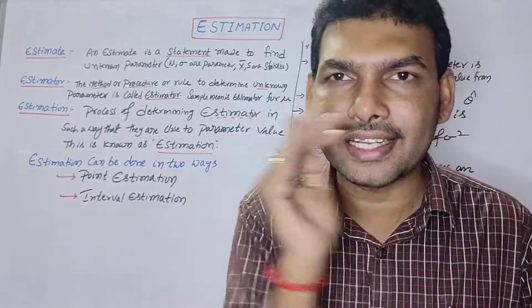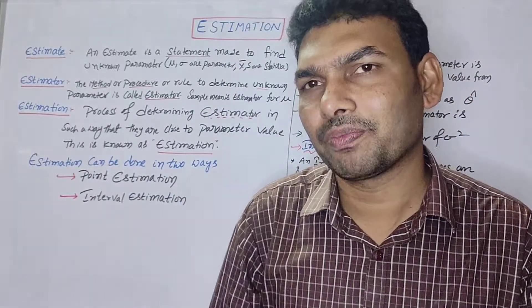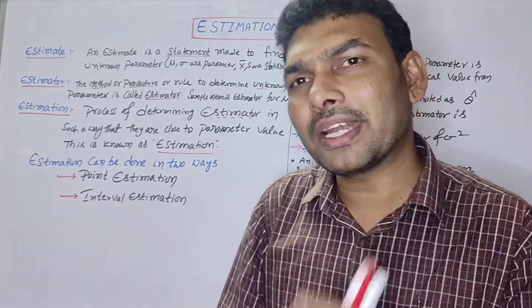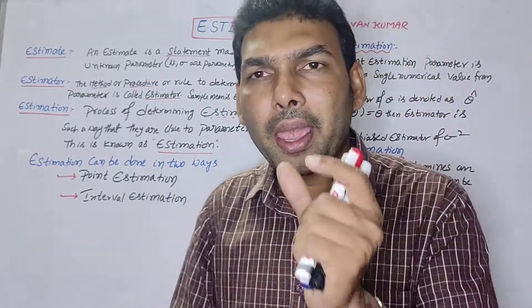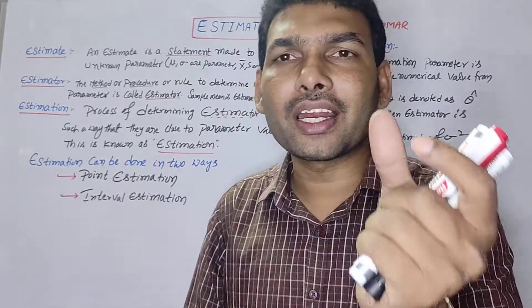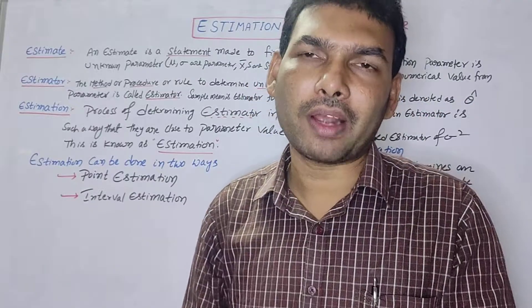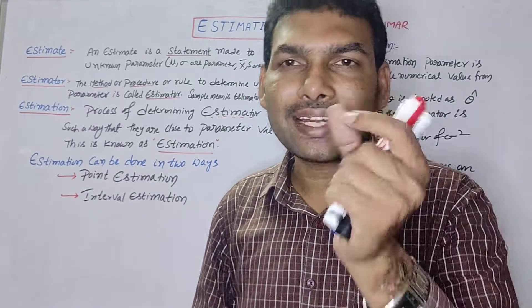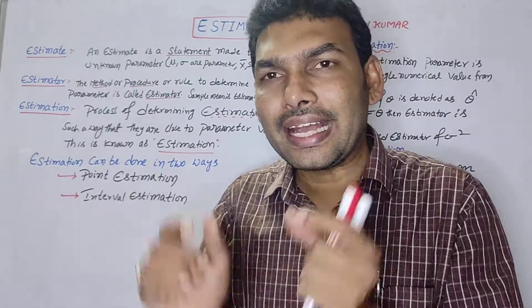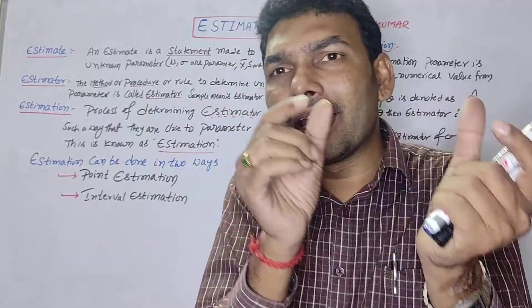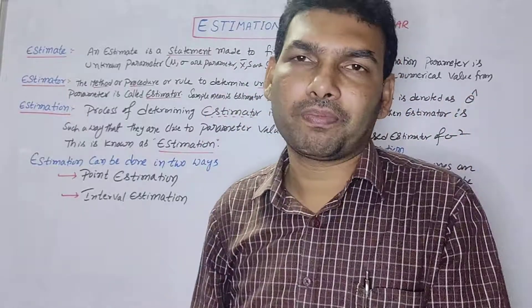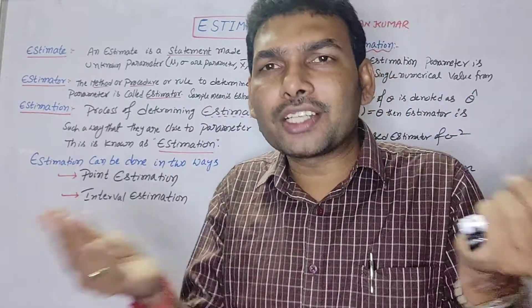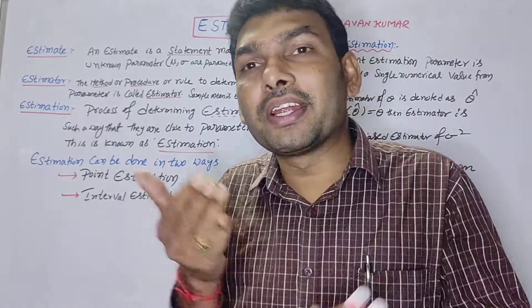A parameter is a population-related measurement, while a statistic is a sample-related measurement. Population is unlimited in size.